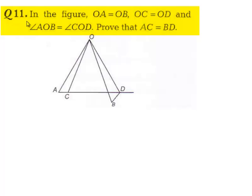Moving on to question number 11. In the figure, OA is equal to OB, OC is equal to OD, and angle AOB is equal to angle COD. Prove that AC is equal to BD.